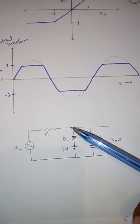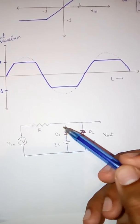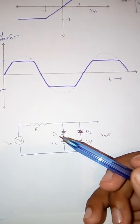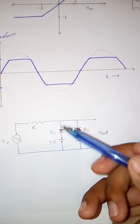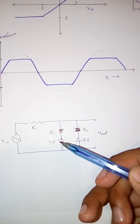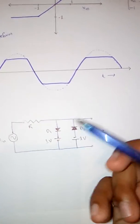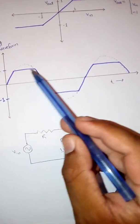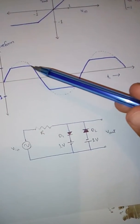But as Vin approaches 1, the positive half cycle connects this diode in forward bias, and then it gets shorted. The 1-volt battery then becomes the voltage we get as output — so this 1-volt battery gives us that straight line at 1 in the output waveform.